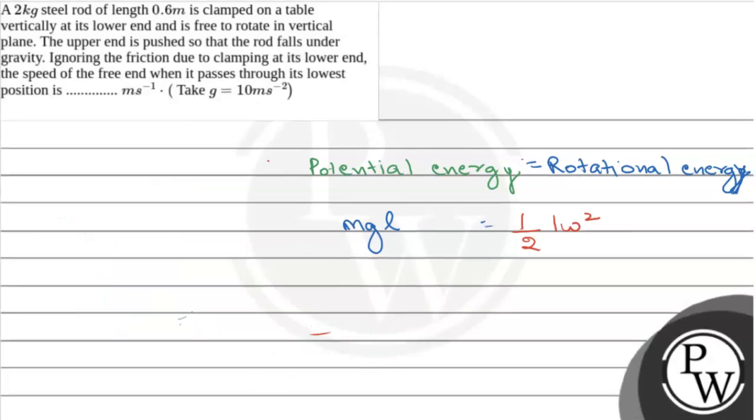We here apply the conservation of energy. So, potential energy equals rotational energy. And so, mgl equals ml² by 3, multiplied by half, multiplied by omega square. So, on calculation, omega comes out to be root 6g by l.